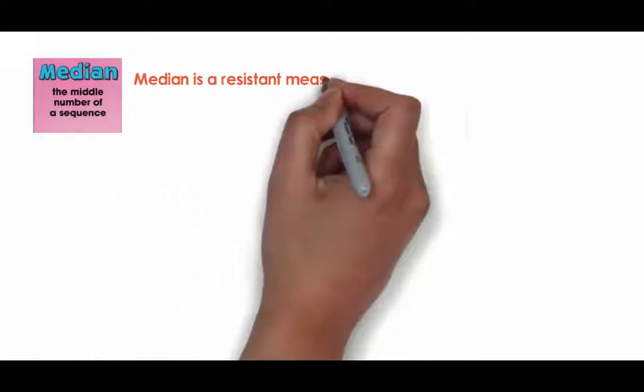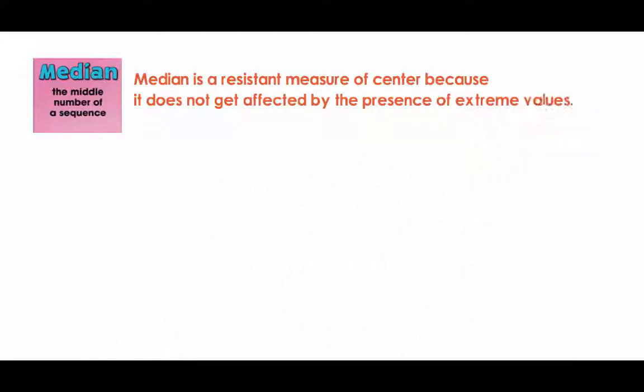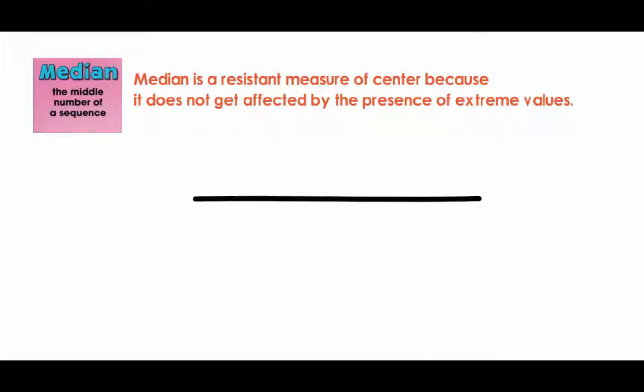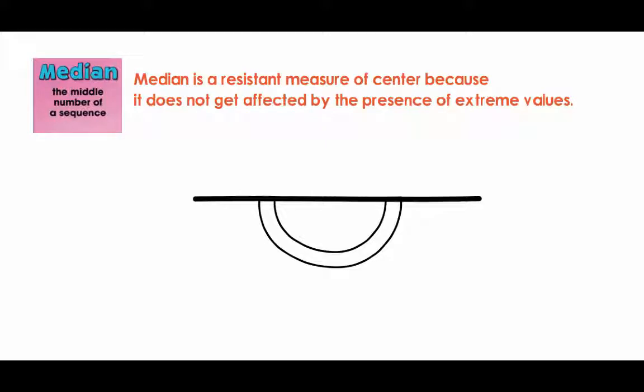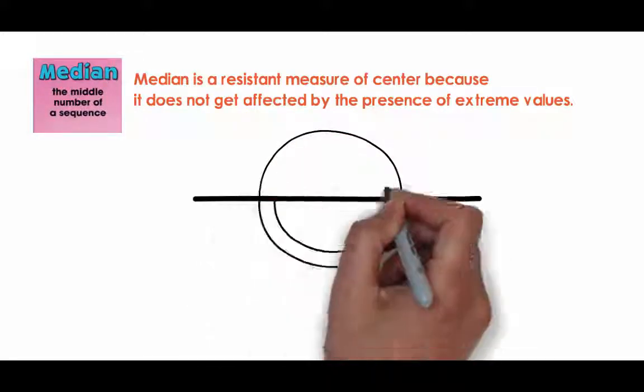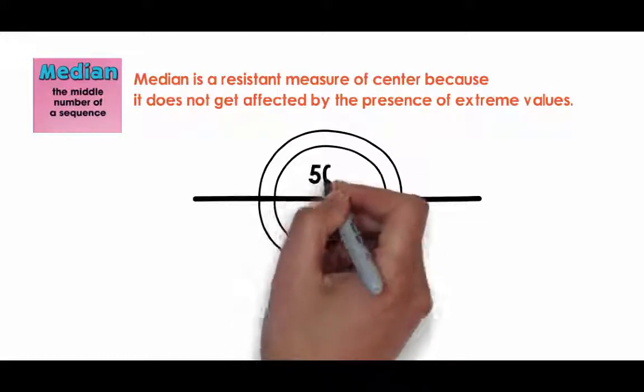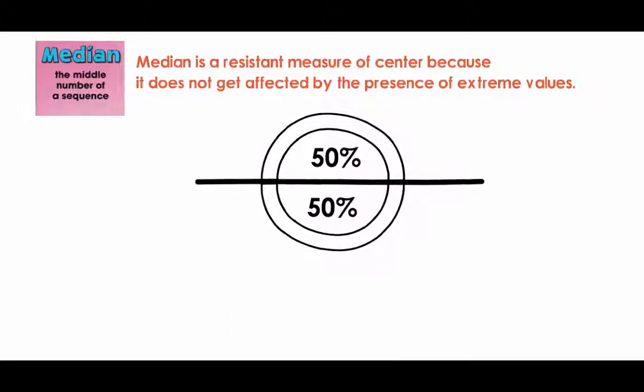Median. Unlike the mean, median is a resistant measure of center because it does not get affected by the presence of extreme values. Median can be thought of as a value which divides the set of data into two equal halves when arranged in increasing or decreasing order. That is, 50% of the observations lie above the point and 50% below it.